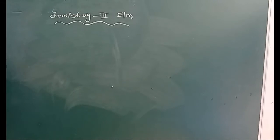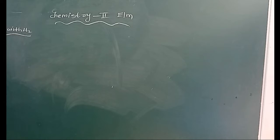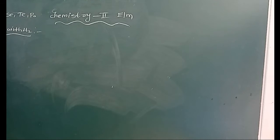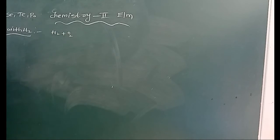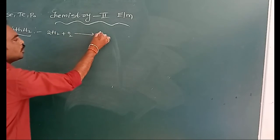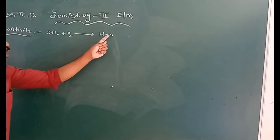First, reaction with Hydrogen. The 16th group elements — Oxygen, Sulphur, Selenium, Tellurium, and Polonium — all react with Hydrogen. For example, Hydrogen reacts with Oxygen to form water molecules, H₂O. This is called Oxygen hydride.